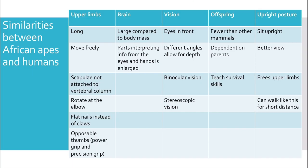We'll look at the similarities between African apes and humans. For the upper limbs: in both, they are long and move freely, the scapulae is not attached to the vertebral column, they rotate at the elbow, they have flat nails instead of claws, and they have opposable thumbs which provide a power grip and also a precision grip.